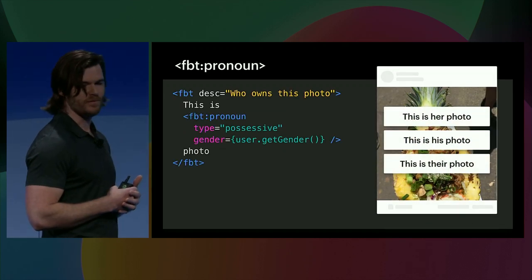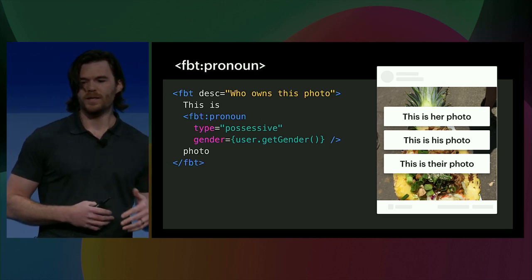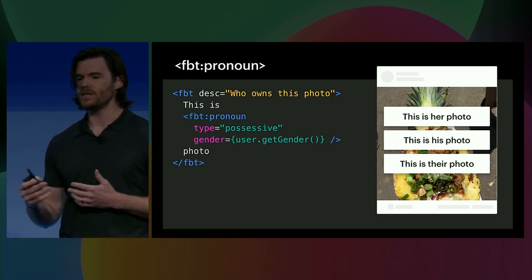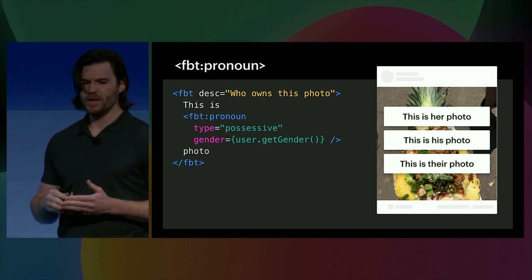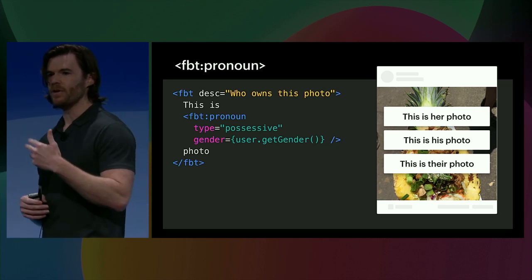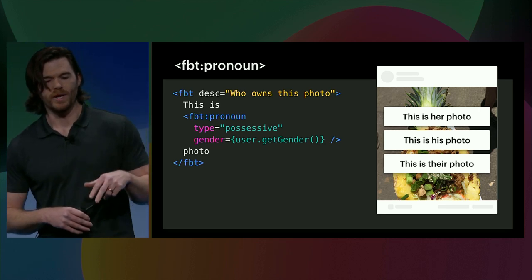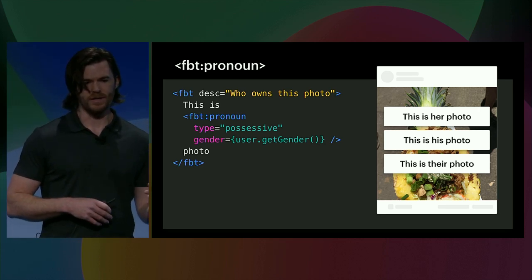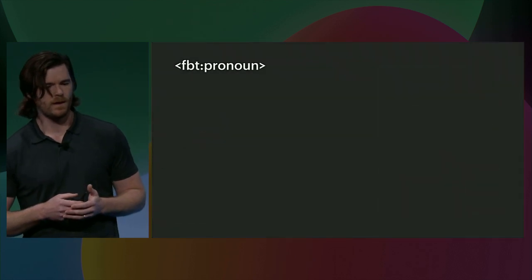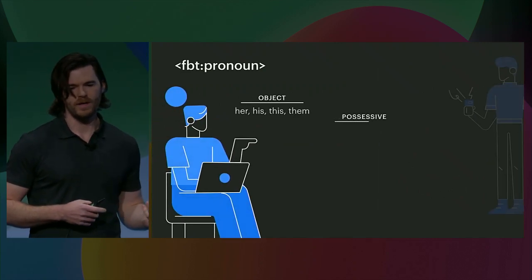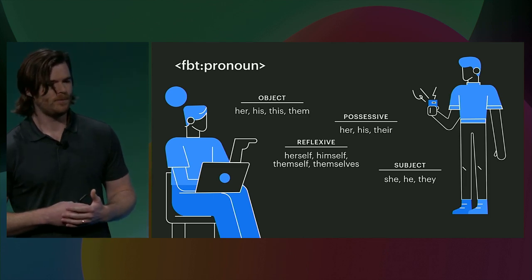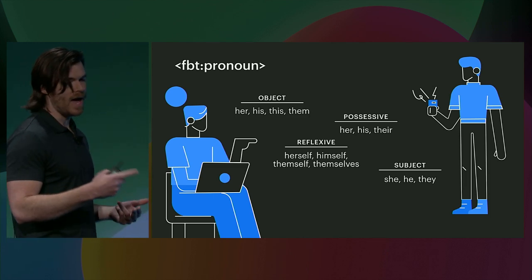Another gender construct we have is FBT pronoun, which offers a convenient way to generate text that would otherwise be tedious when dealing with gender multiplexing. The author can decide between four different types — here we're using possessive. When passed the gender at runtime, the correct branch is selected from the runtime table. In this example, we're generating three sentences: 'This is her photo,' 'This is his photo,' and 'This is their photo.' Pronouns can be one of four types — object, possessive, reflexive, and subject — and depending on the type, we can generate three to four texts based on the gender of the pronoun.